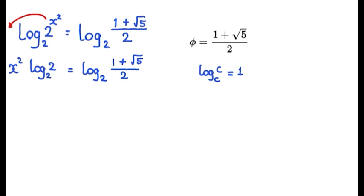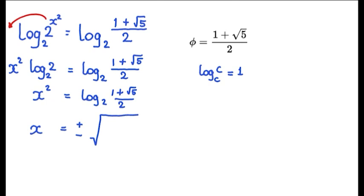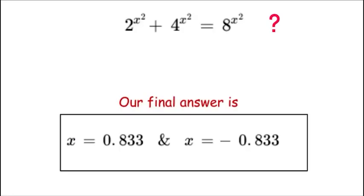Taking the square root of both sides, x equals plus or minus the square root of log base 2 of the golden ratio, which is 1 plus square root of 5 over 2. Evaluating with a calculator, the final solutions to the equation 2 to the power of x squared plus 4 to the power of x squared equals 8 to the power of x squared are x equals 0.833 and x equals negative 0.833.